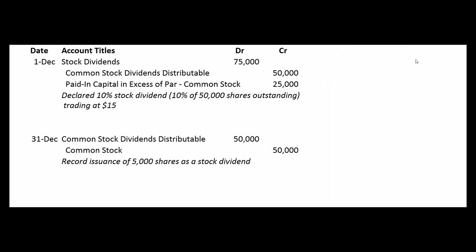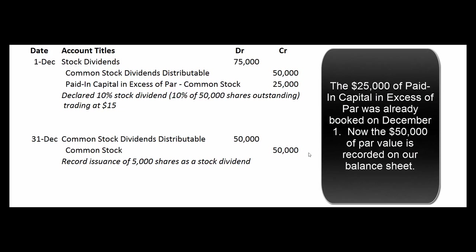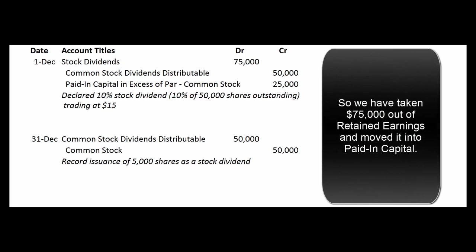On December 31st, it's time to mail out the new pieces of paper. We credited the account called Common Stock Dividends Distributable — a reminder that we have to distribute shares. Now we take that reminder account off our books with a debit and credit common stock for the par value of those shares. There were 5,000 shares at $10 par, so we credit common stock for $50,000. The net effect of these two journal entries is that we've taken $75,000 out of retained earnings and moved it into paid-in capital.